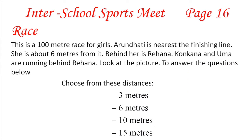This is a 100-meter race for girls. Arundhati is nearest to the finishing line — she is about 6 meters from it. Behind her, Rehana, then Konkana and Uma are running. Look at the picture to answer the questions below. Choose from these distances: 3 meters, 6 meters, 10 meters, or 15 meters.